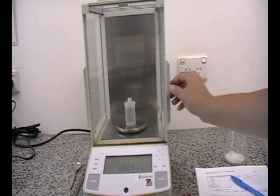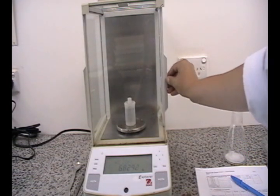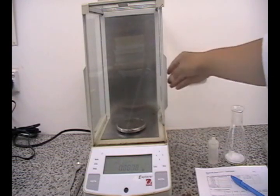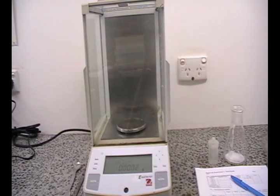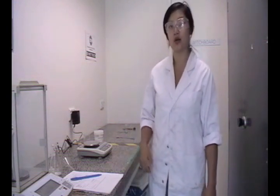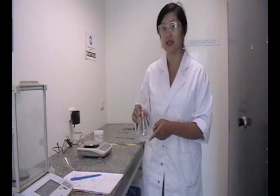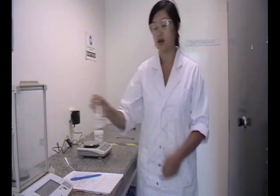When you are done, take the empty weigh bottle out of the balance and close all the doors. Once you have recorded your final result, make sure you take all your belongings out of the analytical balance room. You now have all the information you need to work out how many grams of substance is in the conical flask. We have now reached the end of the demonstration. Thank you for watching.